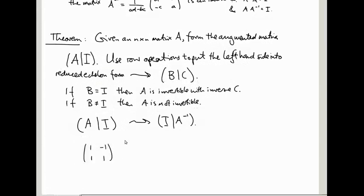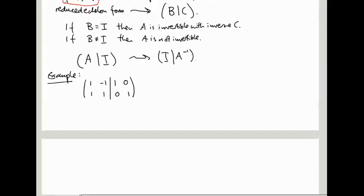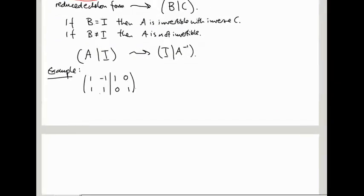Alright, this is A. So let's apply this theorem. Let's write A and then a vertical bar, and then the identity matrix, which is now going to be a 2 by 2 identity matrix. Right, that's what I mean here with this piece of notation. If this was a 3 by 3 matrix, we'd have to stick the 3 by 3 identity matrix here. We'll do another example like that soon. Now we want to do row operations to this matrix.